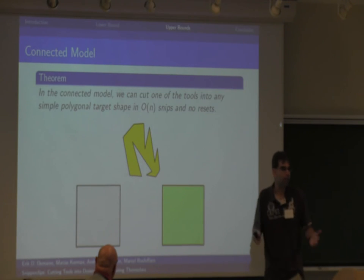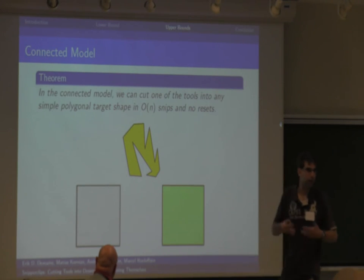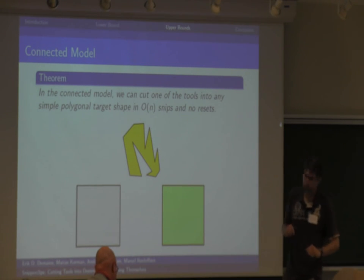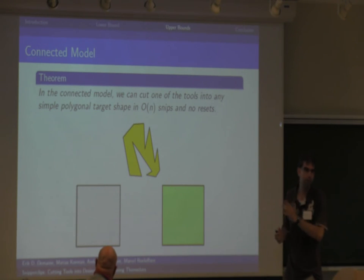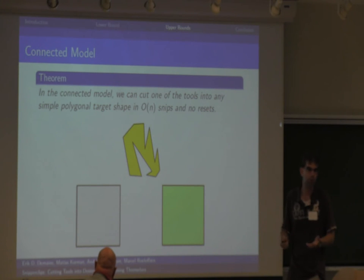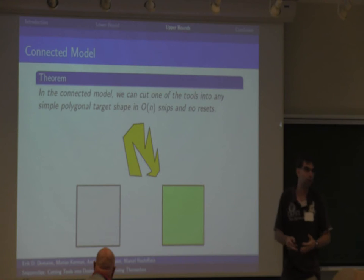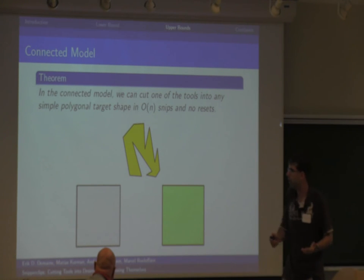Now, on to some upper bounds, because I think those are algorithmic and more interesting to talk about. Let's first look at the connected model. Remember, for both the connected and disconnected model we already have a lower bound of a linear number of snip operations. For the connected model, I'm going to show that actually a linear number of operations is always enough.